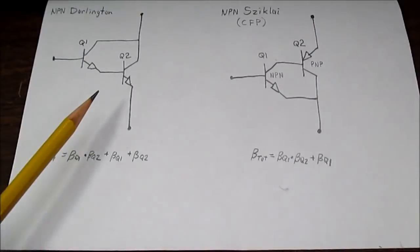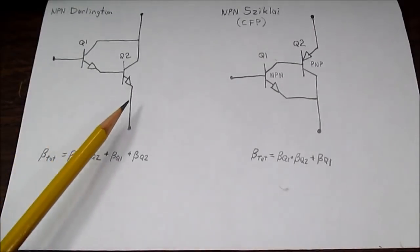The Darlington configuration gets its name from Sidney Darlington, who developed the circuit back in the early 50s before transistors were really even common out there.